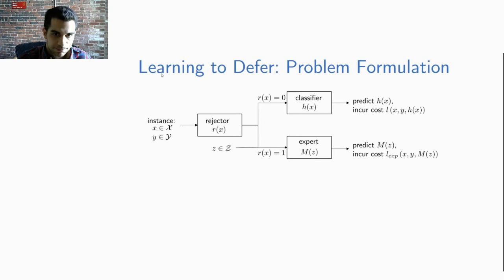On the other hand, if the rejector defers by outputting one, then the expert is first given an additional context Z. In the chest x-ray example, the additional context contains the medical records in addition to the x-ray which is symbolized by X. The expert predicts m of Z and as a whole in the system we incur an expert loss that depends on the covariate X, label Y, and actual expert prediction m of Z.